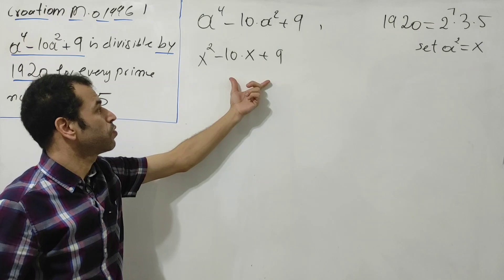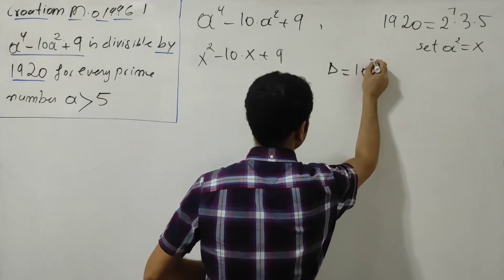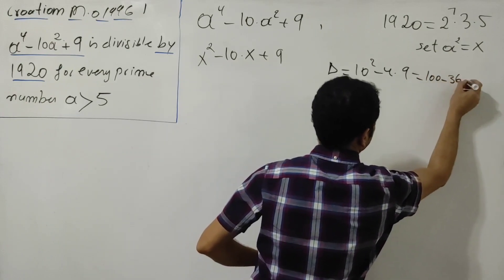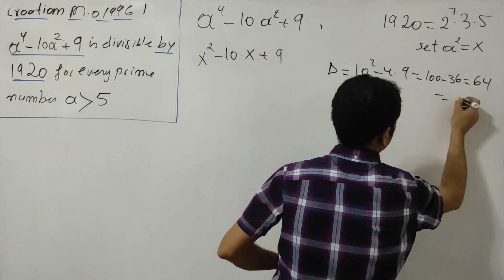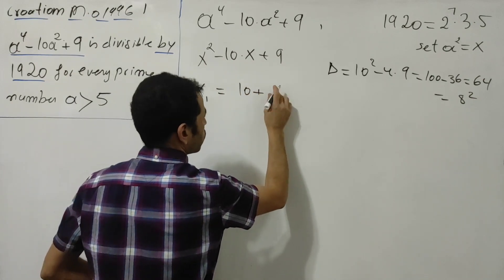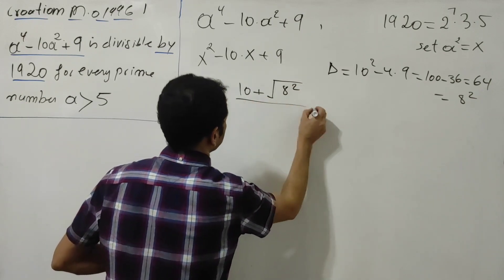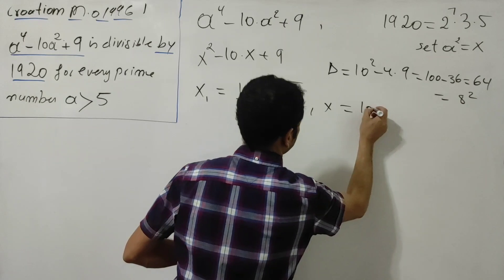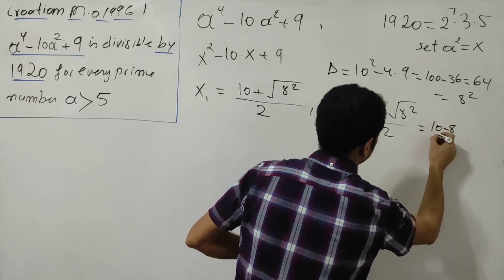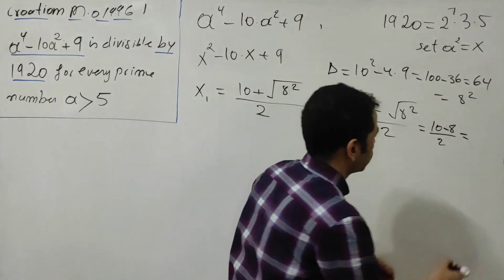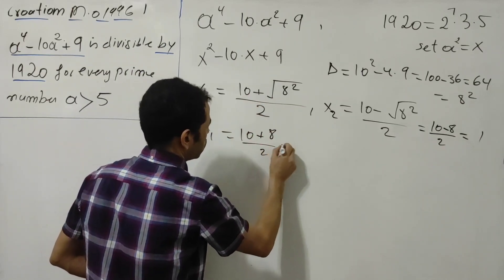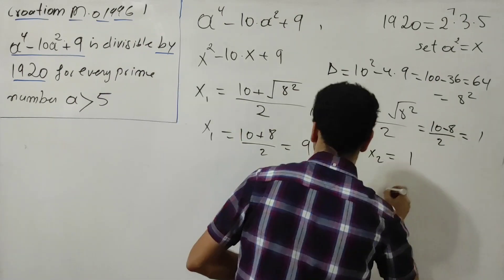Now I'll compute the discriminant: delta equals ten squared minus four times nine, which gives 100 minus 36 equals 64, which is 8 squared. I have two solutions: x₁ equals (10 plus square root of 64) divided by 2, and x₂ equals (10 minus 8) divided by 2. So x₂ equals 2 over 2, which is 1, and x₁ equals 18 over 2, which is 9.